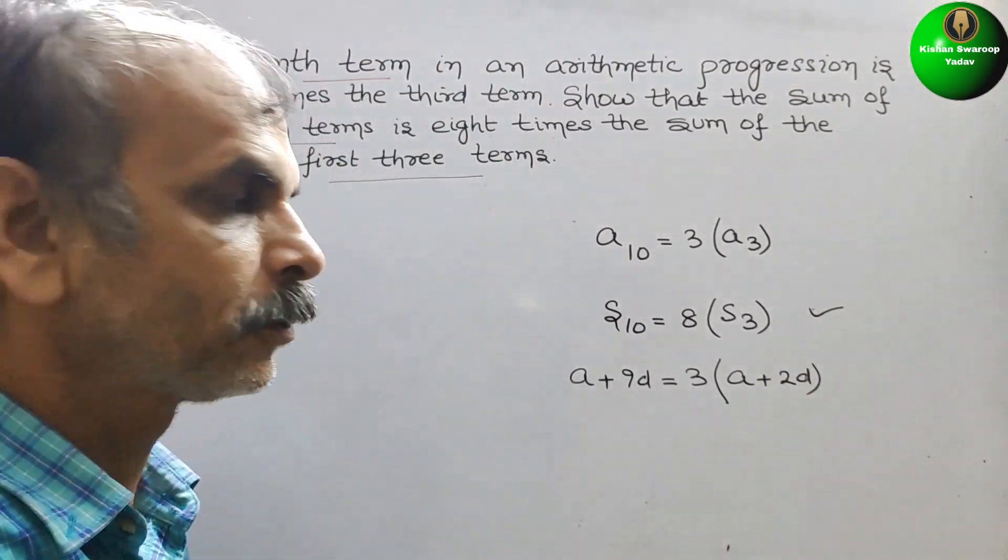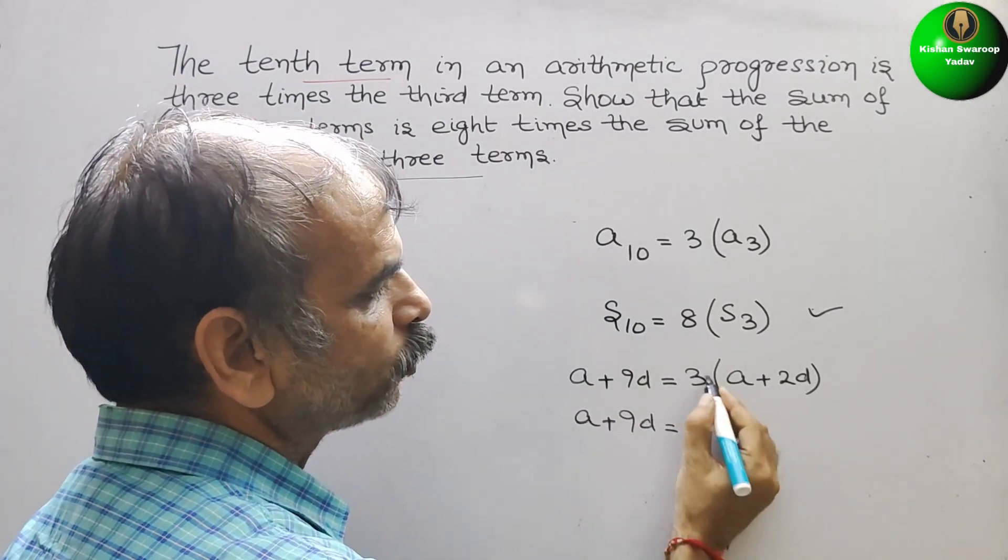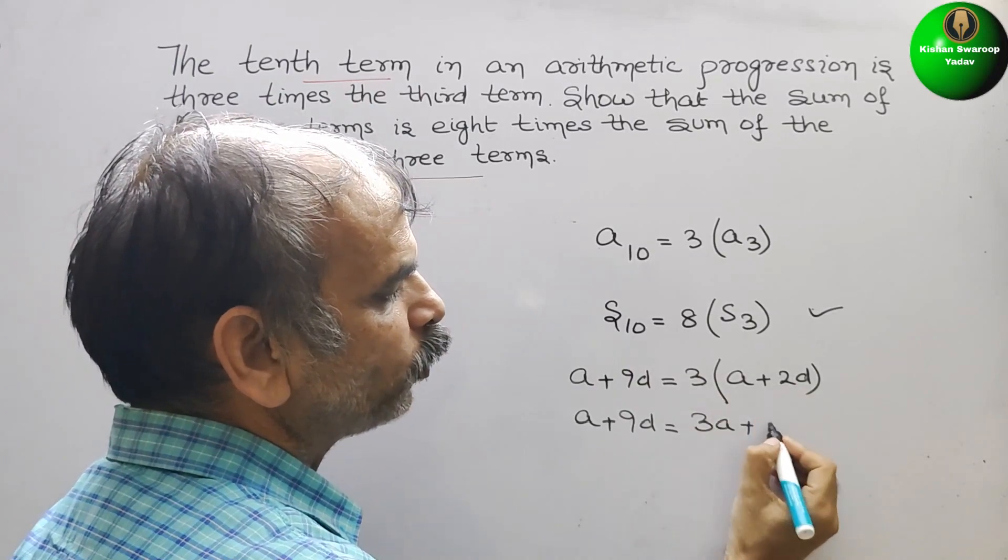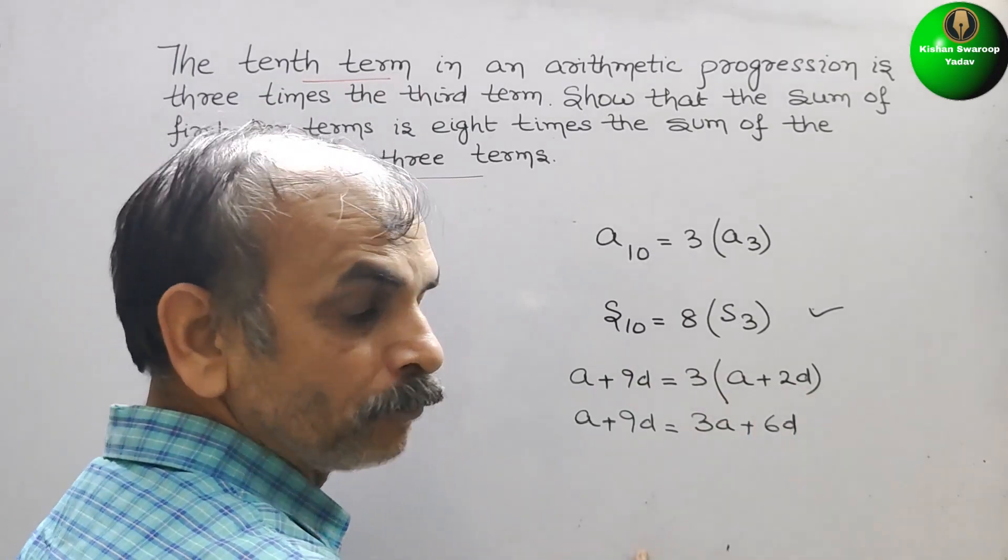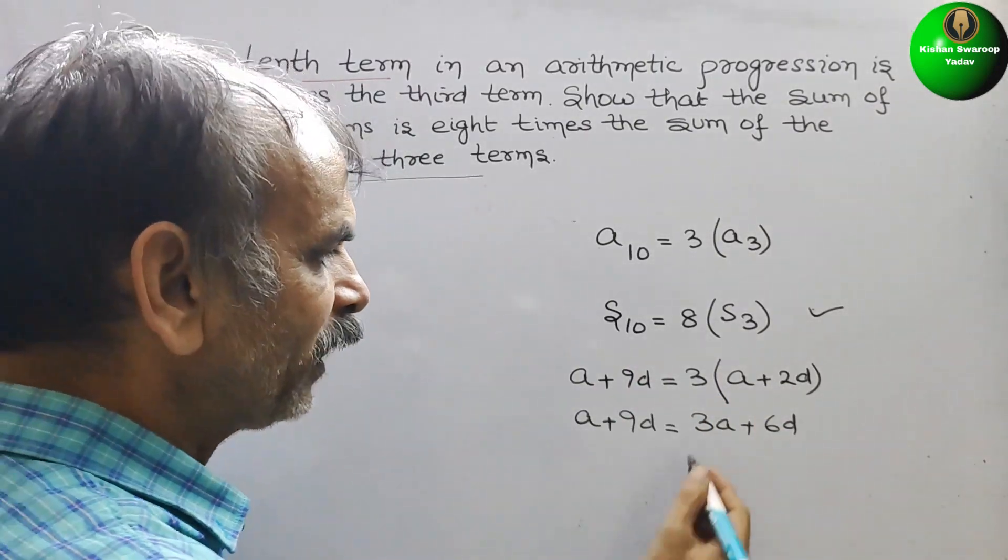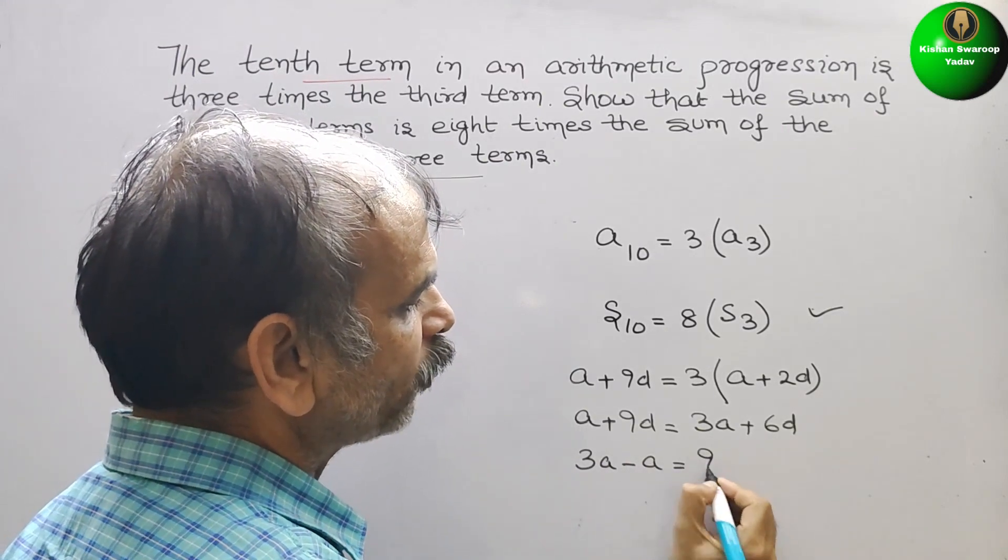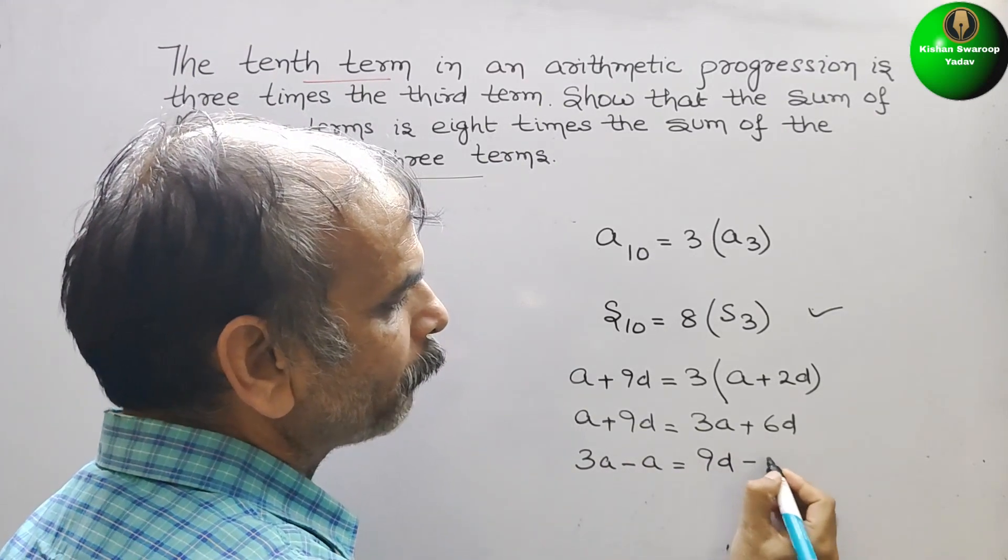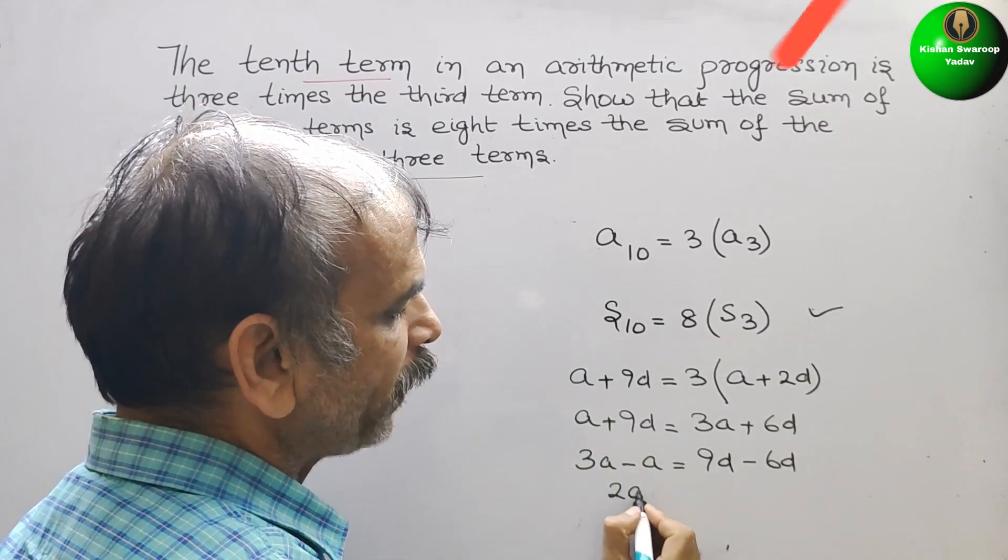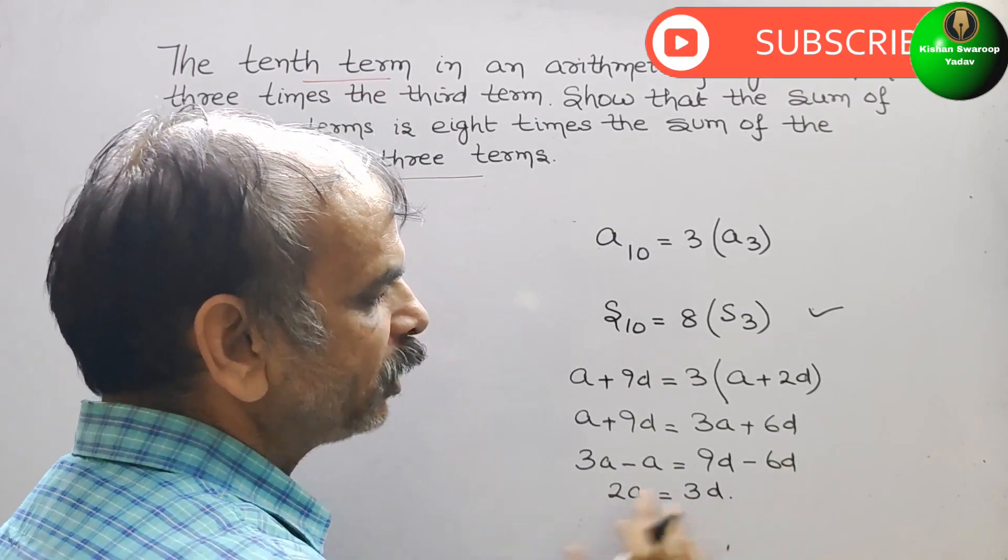Now solve this. So here it will be A plus 9D is equal to 3 into A is 3A plus 3 into 2 is 6D. Bring D to one side, A to one side. So we will get 3A minus A is equal to 9D minus 6D. So this is nothing but 2A is equal to 3D. This we got it.